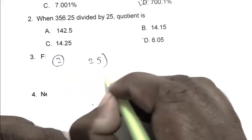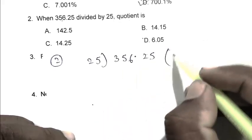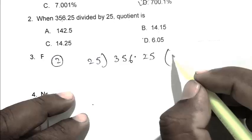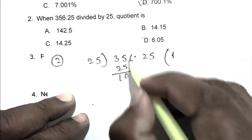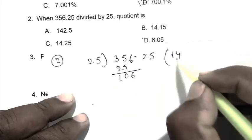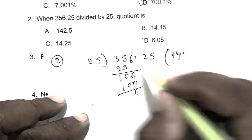25 goes into 356.25. First, 1 times 25 is 25, remainder 10. Then 4 times 25 is 100, remainder 6. After the decimal point, we put the point over there.